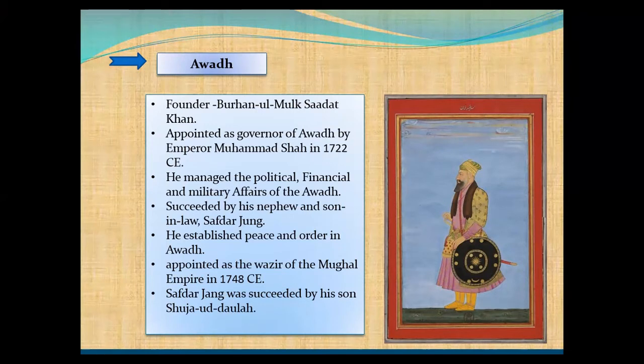Bengal also emerged as an independent state. Murshid Quli Khan established Bengal as an independent state and shifted its capital from Dhaka to Murshidabad. Keeping the economic interests of his province in mind, he carefully managed revenue and increased finances. After his death, he was succeeded by his son-in-law Shuja ud-Din Khan. During his reign, the Bihar Subah was annexed to Bengal.